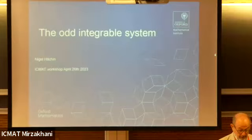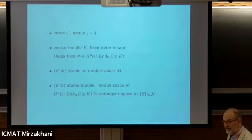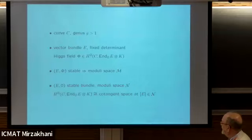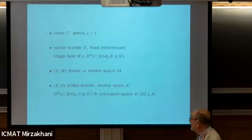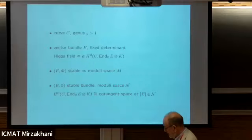Let me begin by setting the context. In terms of Higgs bundles and the original integrable system: we have a curve C, E is a vector bundle - a principal bundle. My Higgs field is trace zero, endomorphism twisted with a canonical bundle, and with a stability condition we have a moduli space. In particular, if the Higgs field is zero, then the moduli space of stable bundles sits inside this as a Lagrangian sub-manifold.